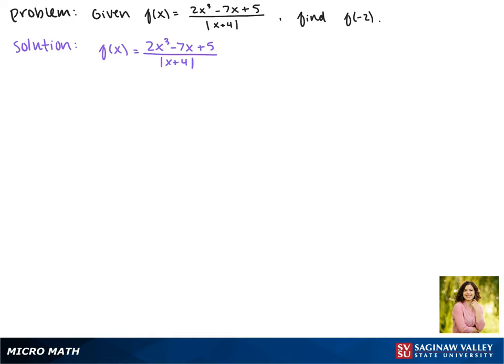We'll start by plugging in negative 2 everywhere we see an x. So, f of negative 2 equals 2 times negative 2 to the third power minus 7 times negative 2 plus 5, all divided by the absolute value of negative 2 plus 4.